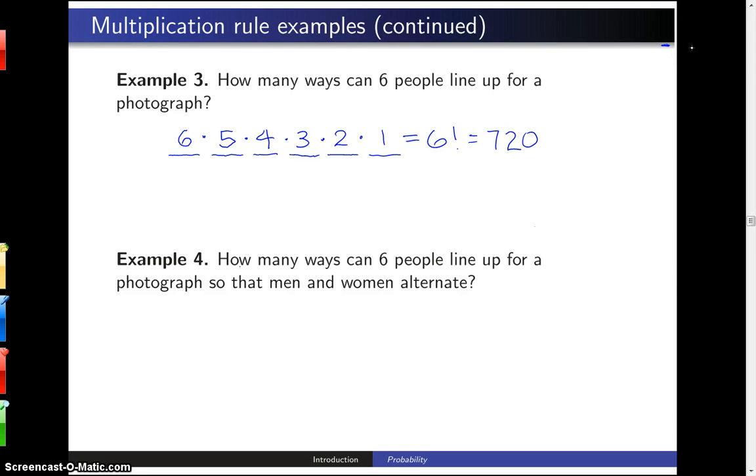The fourth example of using the multiplication rule asks how many ways can six people line up for a photograph so that men and women alternate?